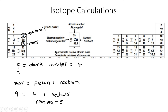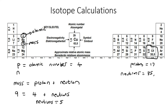But what about chlorine with a mass number of 35.5? The number of protons would be 17, but then the neutrons would be 35.5 minus 17, which is 18.5 - and that is not possible. How can you have half a neutron? We only get a whole number of neutrons. So something's a bit weird, and that's what we're going to talk about in this lesson.